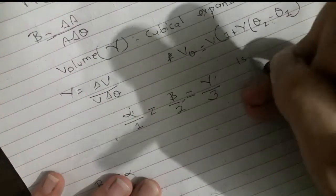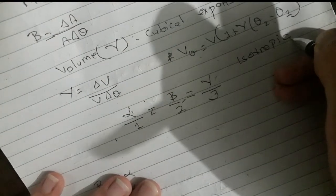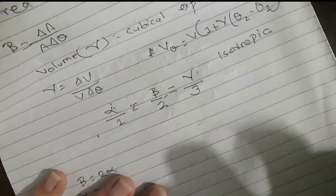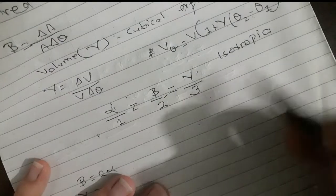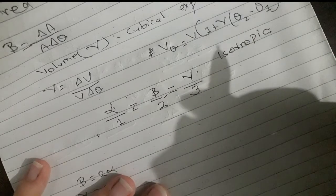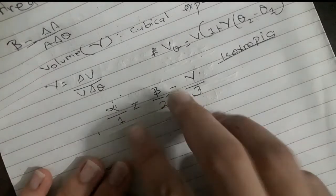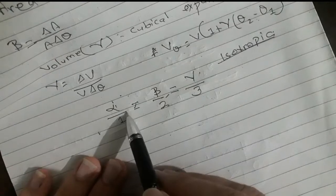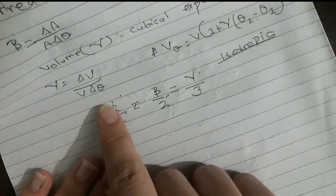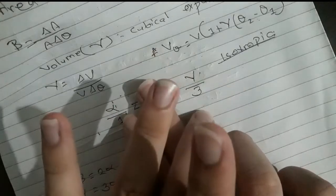This applies to an anisotropic body. You have to find the relation between the three coefficients. For example, if gamma equals 3·alpha, then alpha equals gamma divided by 3.